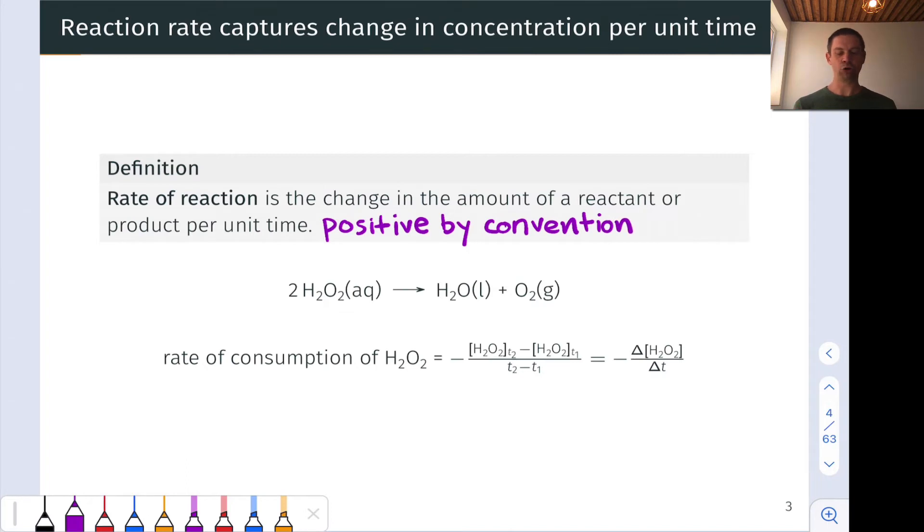And generally, if we're looking at a product coming in, the reaction rate will naturally be positive. If we're thinking about a reactant disappearing, however, the change in concentration is negative. But a negative sign is used to ensure that the rate of reaction is positive by convention.